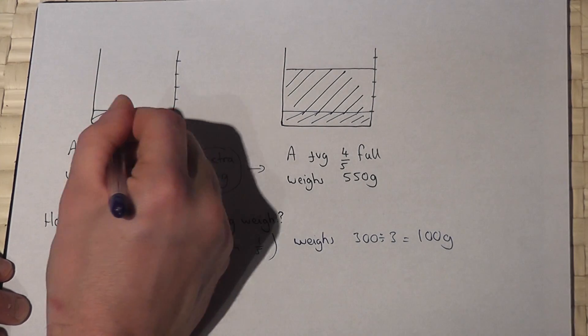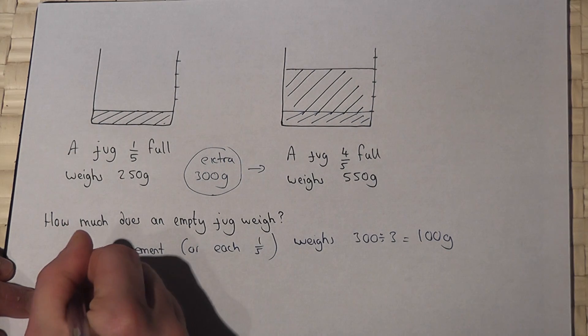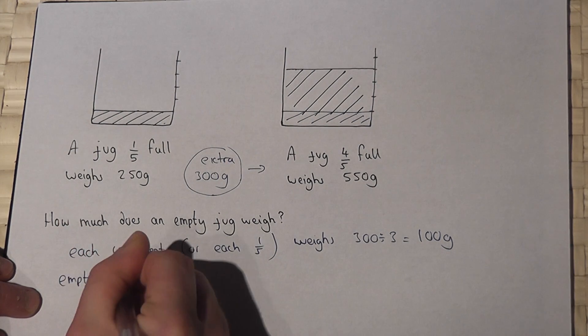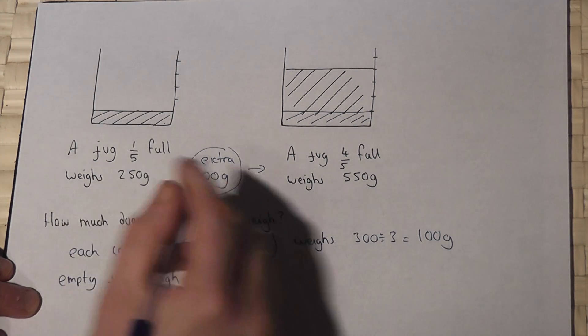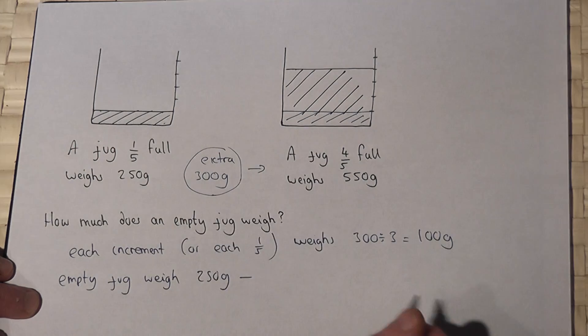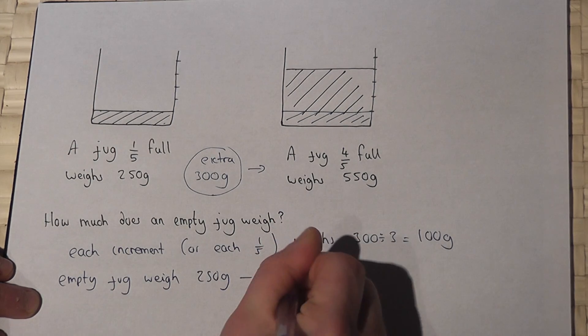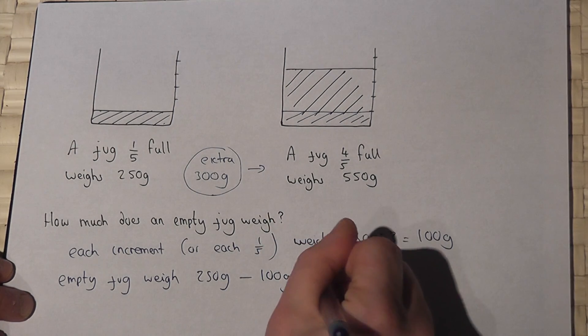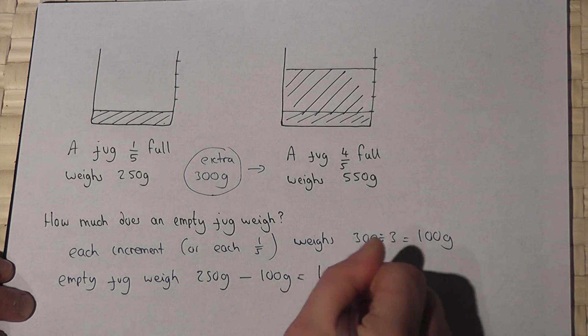Then the empty jug must weigh 250 grams take away this much water which is 100 grams, so it must weigh 150 grams.